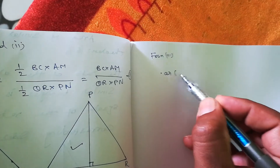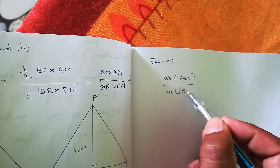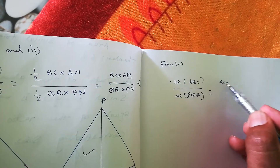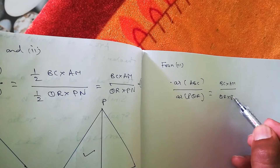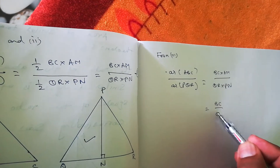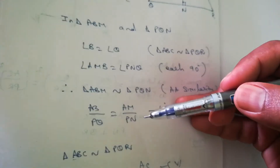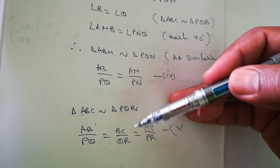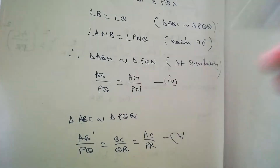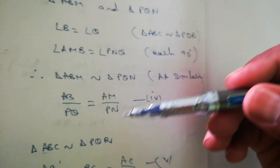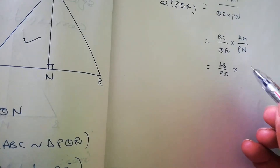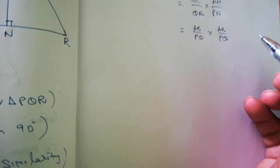From equation three, area of ABC by area of PQR equals (BC/QR) × (AM/PN). Substituting from equation four, AM/PN equals AB/PQ, and from equation five, BC/QR equals AB/PQ. So we get (BC/QR) × (AM/PN) equals (AB/PQ) × (AB/PQ), which gives us (AB/PQ)².